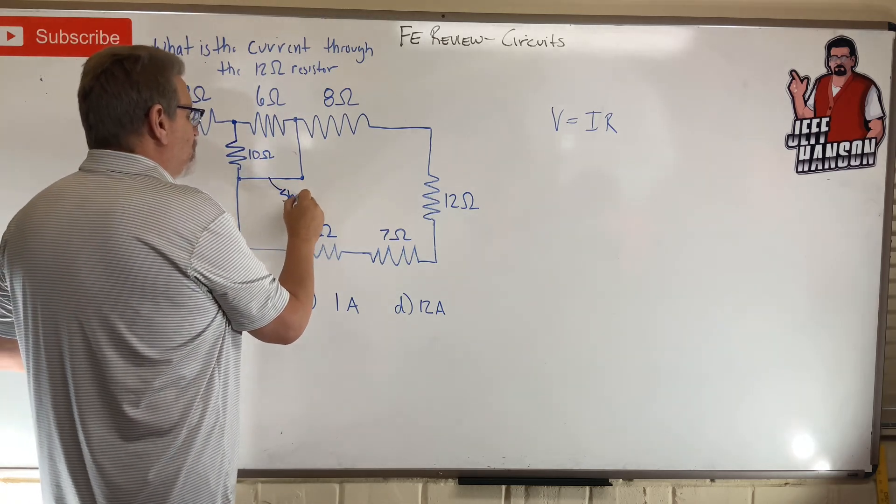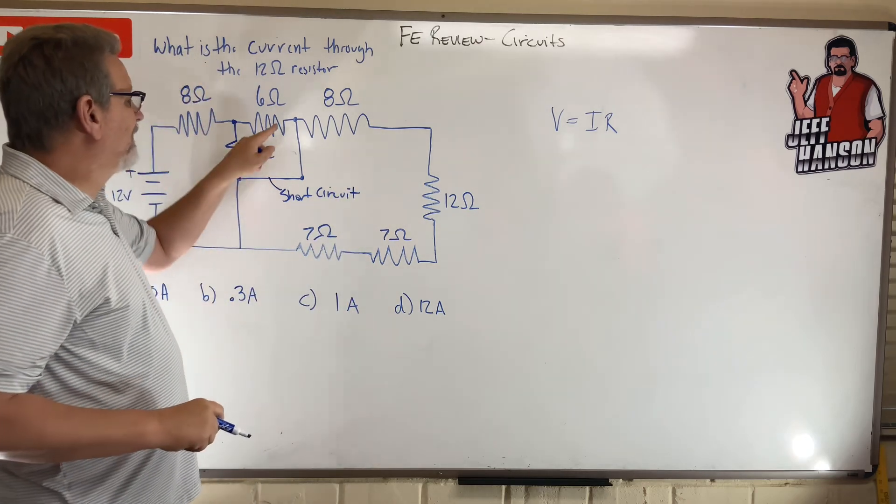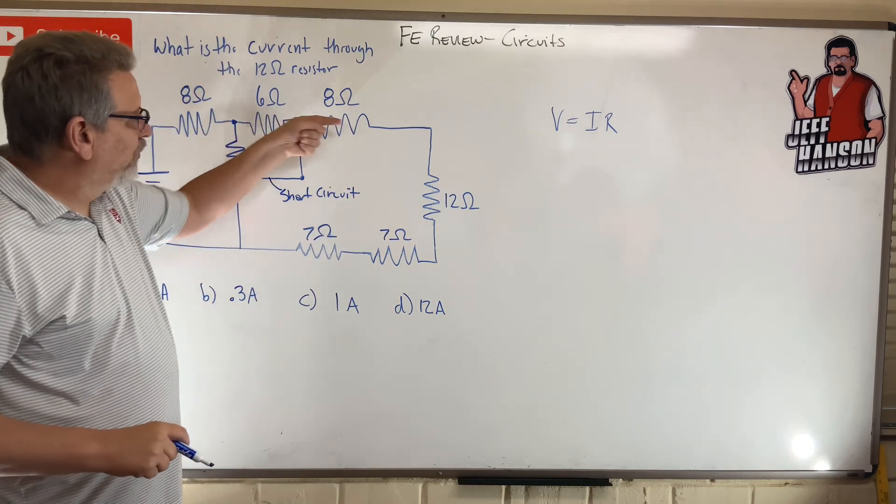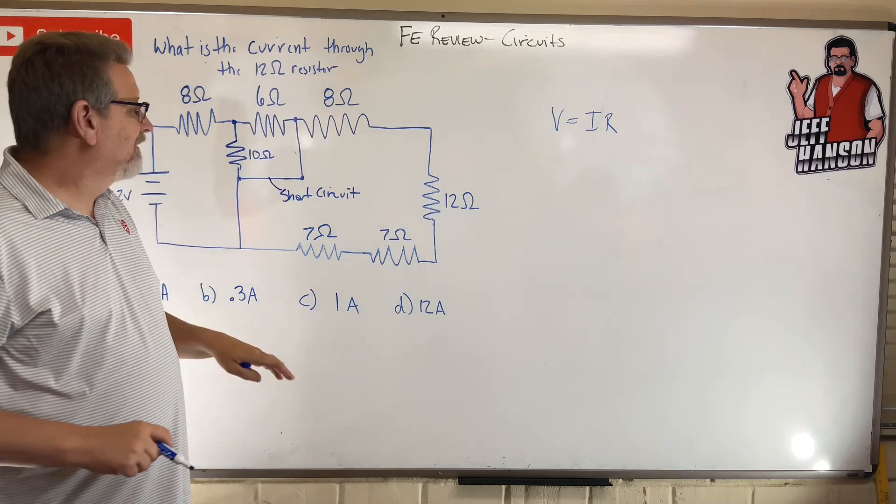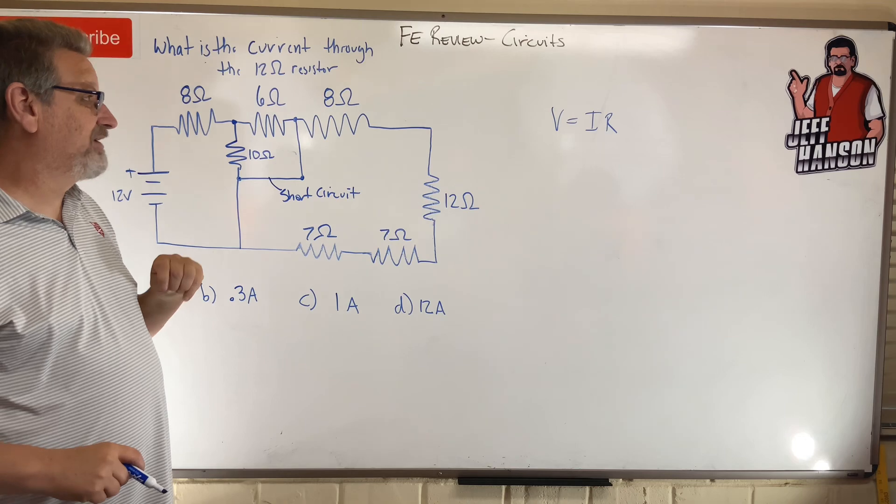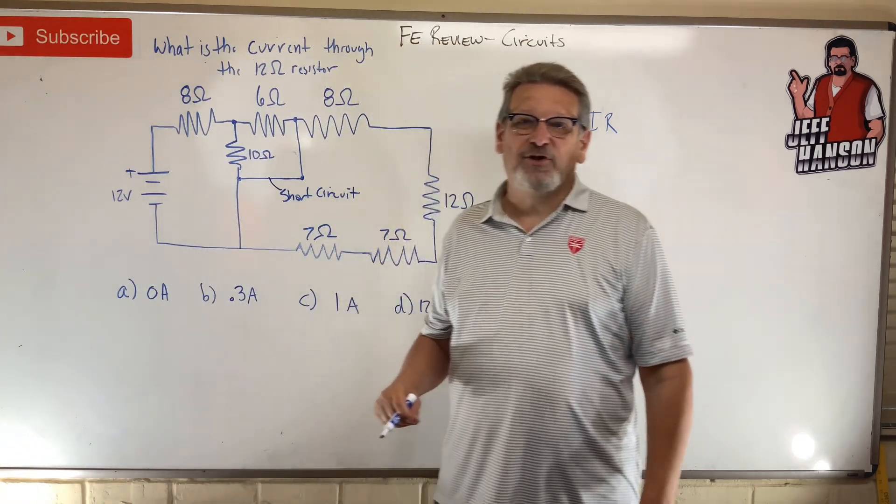Short circuit. And the electricity will go this way. None of it will go that way. No amperage will flow that way. Because of that short circuit, the answer here is no current will go through that 12 ohm resistor because there is a short circuit.